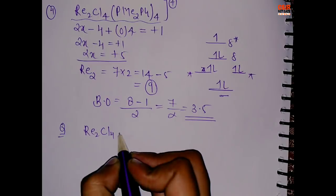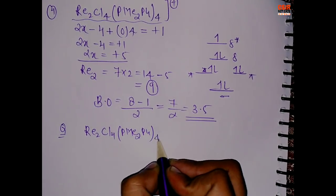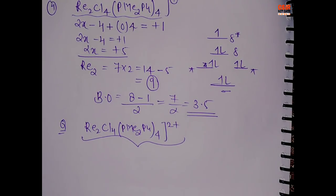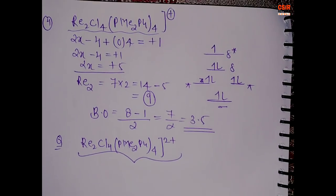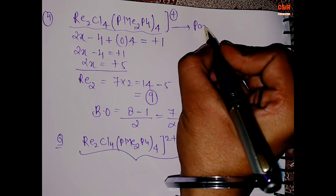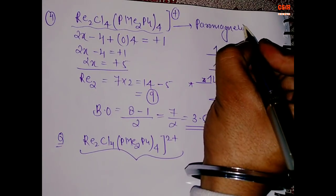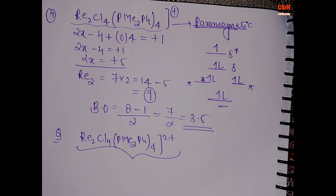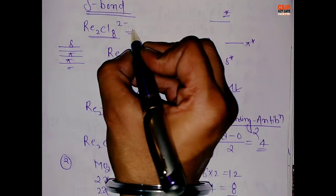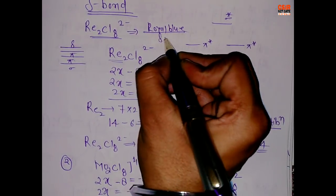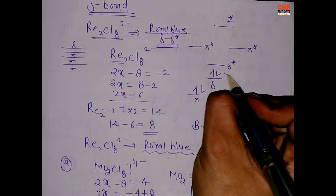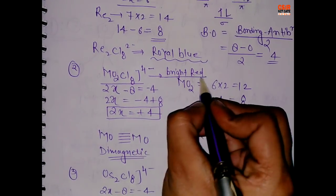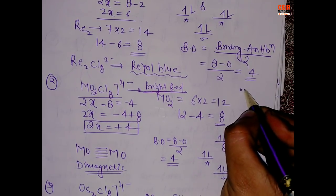For practice, here is a homework question: Re₂Cl₄(PMe₂Ph)₄²⁺ — calculate the bond order and let me know in the comments. Also, there is one unpaired electron in our last example, so that compound is paramagnetic. Regarding colors: Re₂Cl₈²⁻ is royal blue due to the δ→δ* transition; Mo₂Cl₈⁴⁻ is bright red. I'll cover eclipsed/staggered conformations and ESR properties in the next video. Thank you and please subscribe.